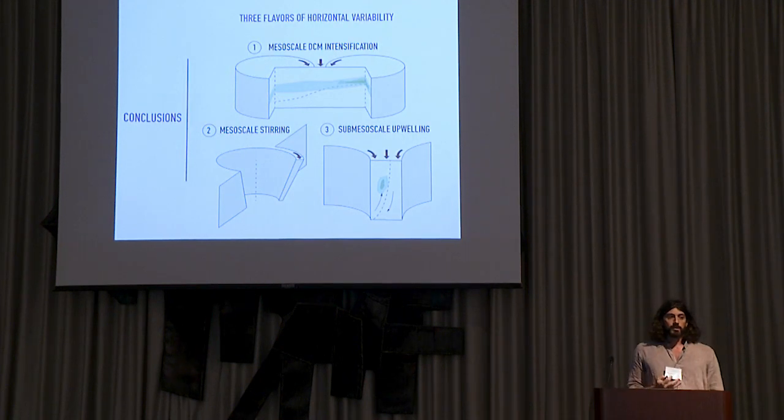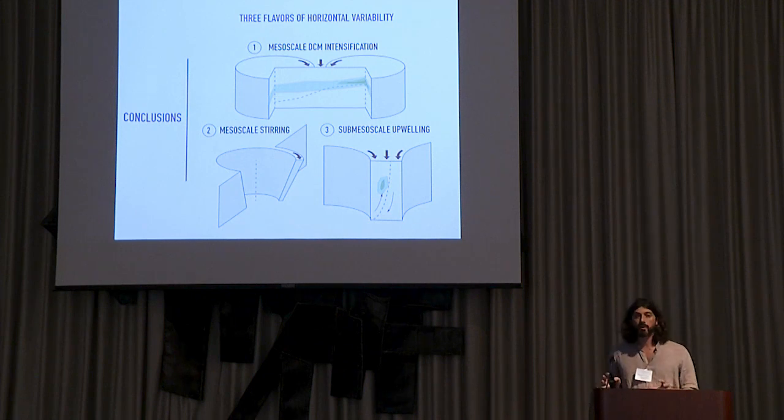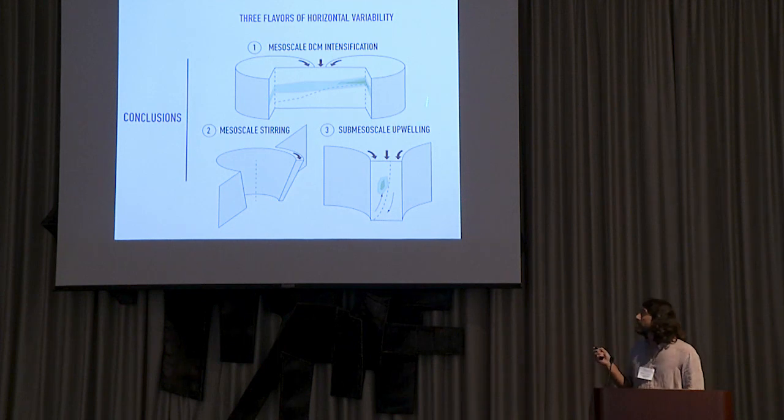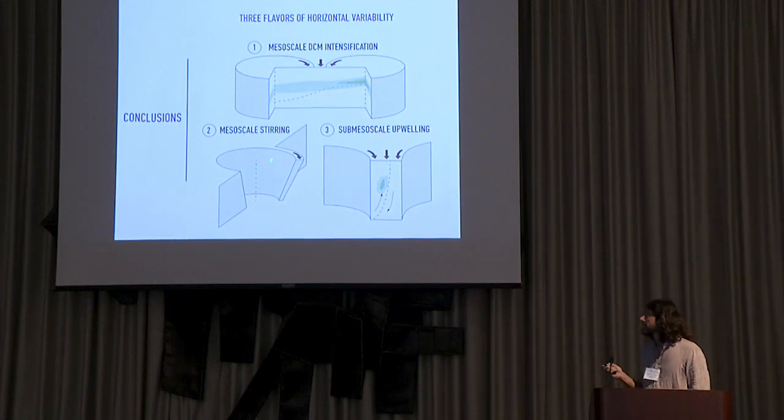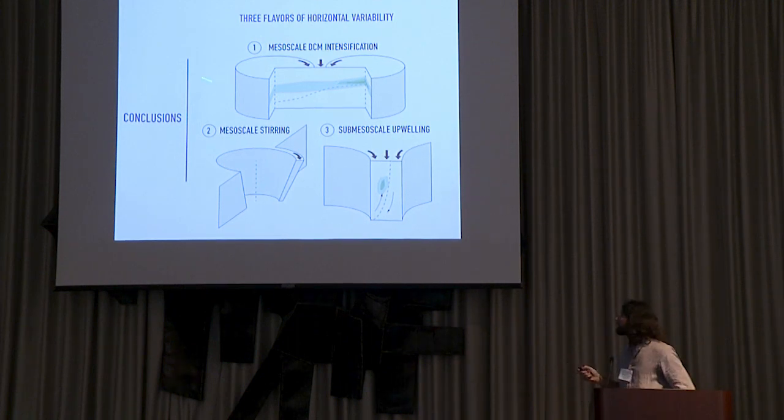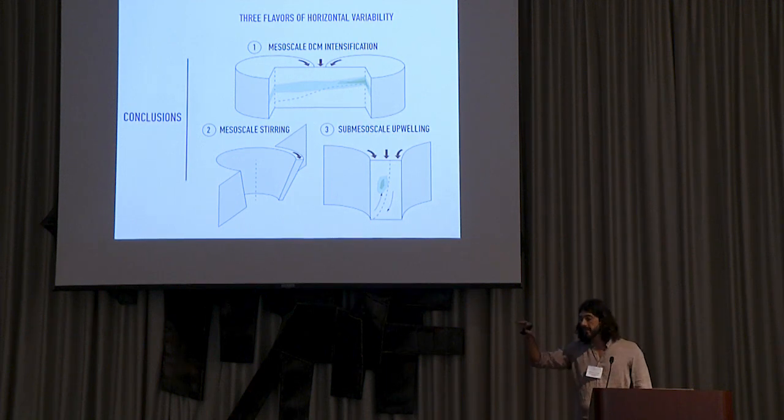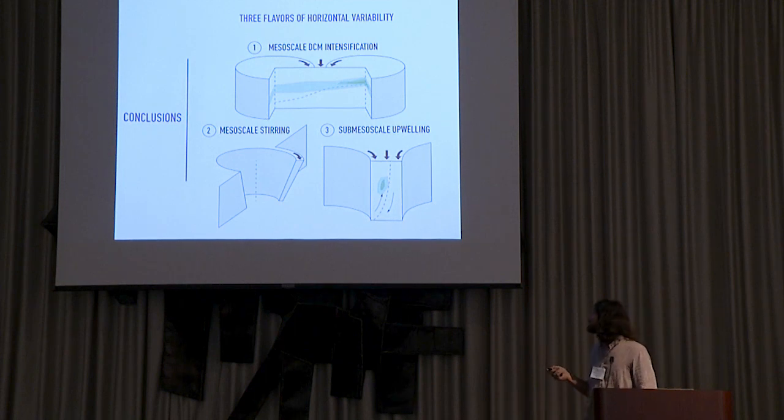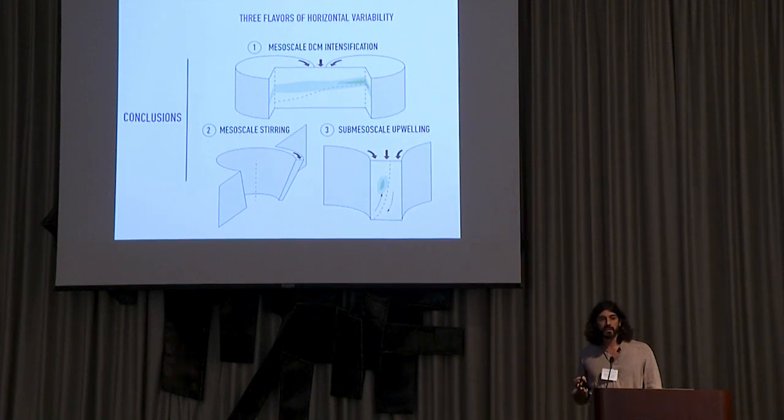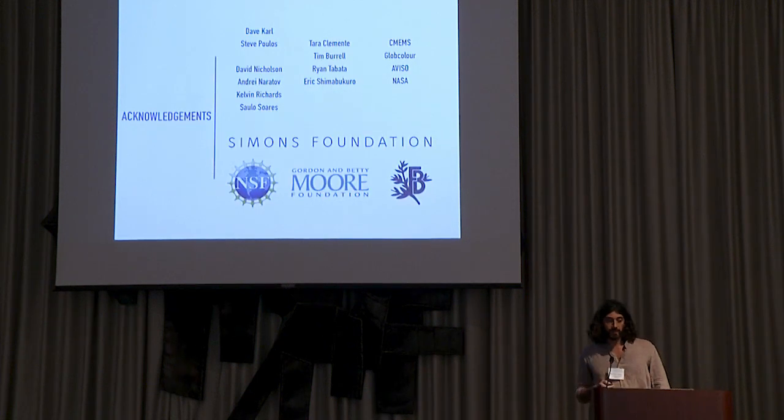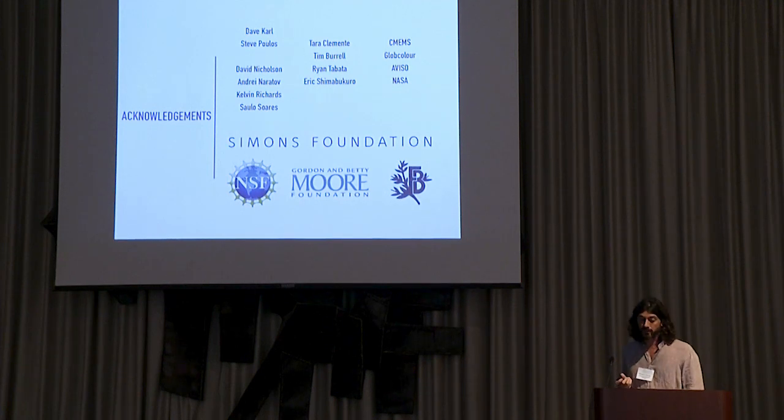In conclusion, with sea gliders we observed several flavors of horizontal variability, specifically in the subsurface where this variability is more hidden. The first is stimulation of the phytoplankton community in the deep chlorophyll maximum of a cyclone. The second was mesoscale steering, where anticyclonic circulation entrains water masses with different properties and likely communities, and transports them for hundreds of kilometers. The third is submesoscale upwelling, where you have stimulation of the community specifically on the light side of a front. I have to thank and acknowledge Dave Karl, Steve Poulos, the funding agencies, and in particular the Simons Foundation. Thank you.